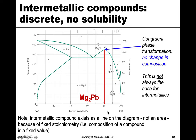One other thing to note about this diagram: if we are on this line and we heat up or cool down from this composition, what happens right at point M is that we go from Mg₂Pb solid to a liquid of the same composition. If we start with a liquid at that composition and cool, we get a solid with exactly that composition — no changes in composition, no extra phases added. We call this a congruent phase transformation, meaning there's no change in composition. So this is a congruent melting point.